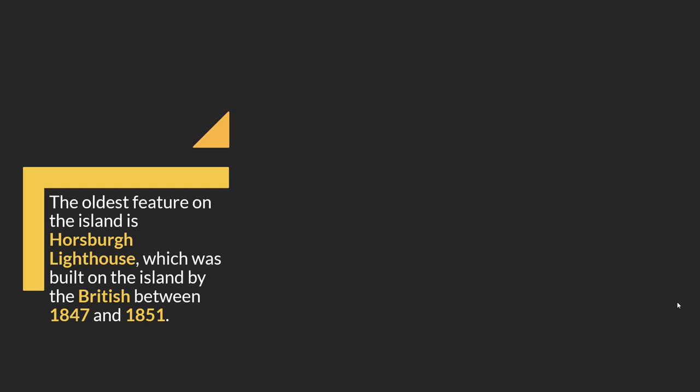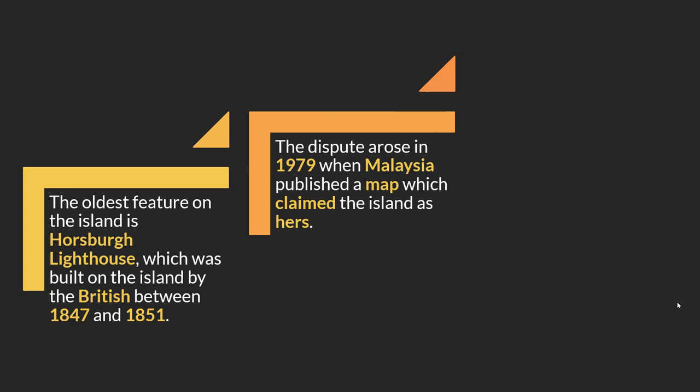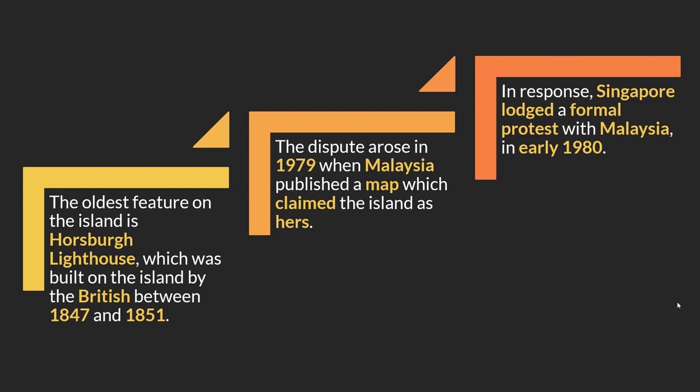The oldest feature on Pedra Branca is the Horsburgh Lighthouse, built by the British between 1847 and 1851 to prevent ships from crashing into the rocks. The dispute actually arose in 1979 — over 100 years later — when Malaysia published a map claiming the island as hers. When countries publish maps claiming territory, if you do not contest it, you might actually lose areas that are supposedly yours. In response, Singapore lodged a formal protest with Malaysia in the 1980s.